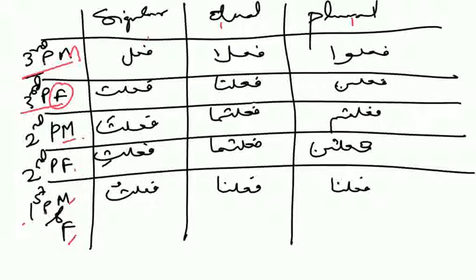Now as we have seen Fa'ala, Fa'ala, Fa'ala on all the Gardaan of the Fa'la Ma'azi Ma'aruf. For example, there is a Zamaayr hidden in Fa'ala. We say that Fa'ala means 'he did' — so what does 'he' mean here? Actually, there is no explicit 'he' written, but we say it because there is a Zamaayr hidden in Fa'ala, and that Zamaayr is Hua, which gives the meaning of 'he'.